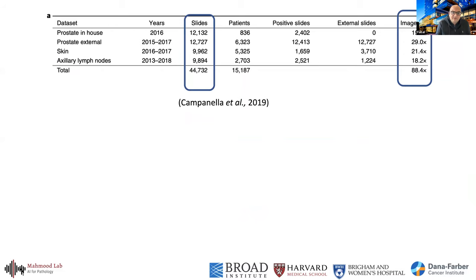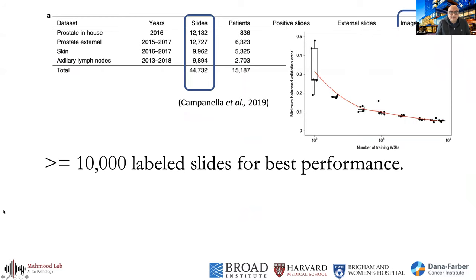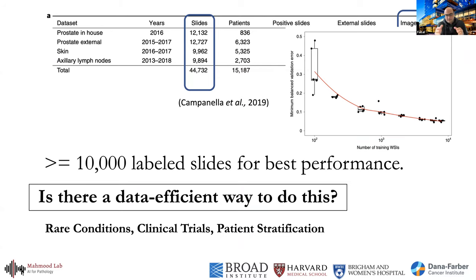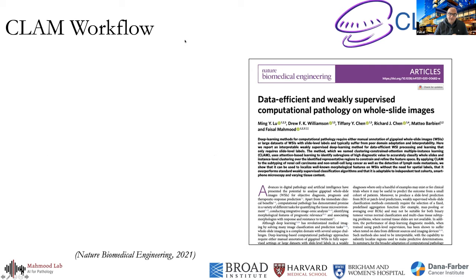Vanilla multiple instance learning with max pooling-based aggregation can be updated by a single patch, meaning you underutilize the gigapixel image and require tens of thousands of images to train a robust model. A study published in Nature Medicine in 2019 showed you needed about 10,000 whole slide images to achieve the same performance as pixel-level annotated setups. Our goal as I started the group was to find a data efficient approach — applicable to rare conditions, clinical trials, patient stratification, and beyond simple classification.